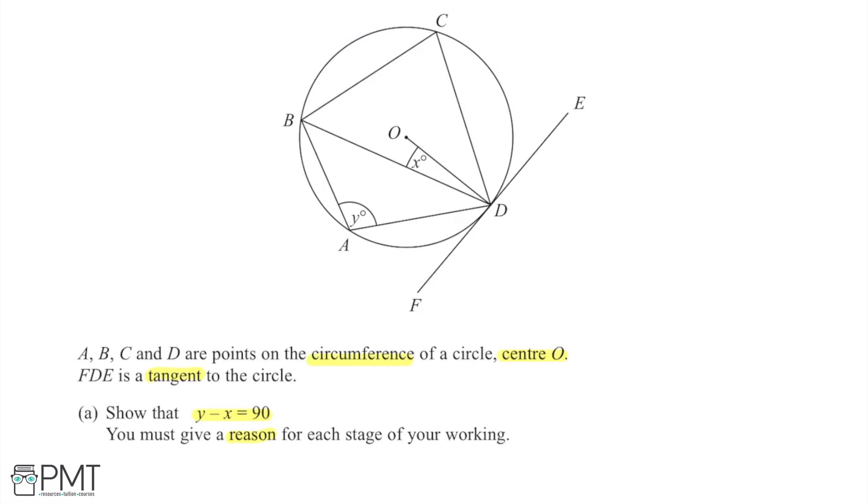So looking for 90 degree angles and thinking back to my circle theorems, I'm instantly remembering one of the circle theorems which is going to link the tangent of a circle and its radius. This circle theorem is that the tangent to a circle is perpendicular, so at right angles to 90 degrees, makes a 90 degree angle with the radius of the circle.